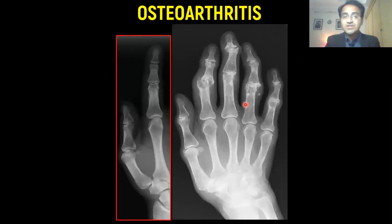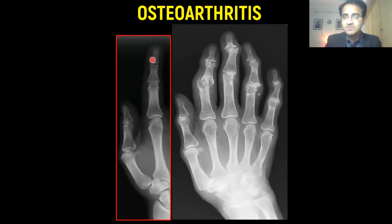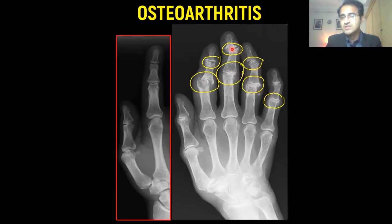This X-ray shows osteoarthritis. On the normal side, you can see normal joints, normal PIPs, and normal DIPs. In the osteoarthritis patient shown in the other image, you can see destruction of all the joints.